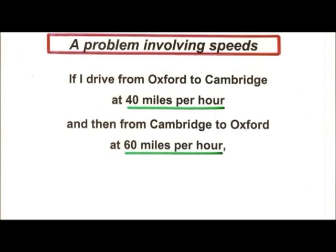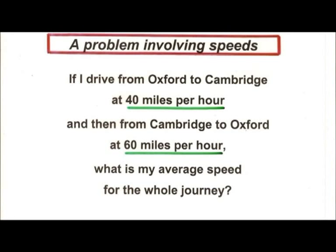Supposing I drive from Oxford to Cambridge at 40 miles an hour. I then drive back from Cambridge to Oxford at 60 miles an hour. The obvious question is: what is my average speed for the whole journey? So you go up at 40, you come back at 60 — obviously the answer's 50.